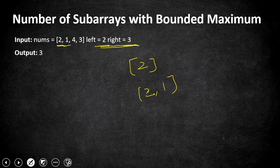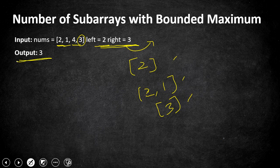Moving to the next element 4: 4 is the maximum element which is actually out of the right boundary, so you cannot include that element in any subarray or even as an individual number. The last element is 3, which is actually the maximum value we need, so we can form an individual subarray with value 3. Overall we found a total of 3 subarrays where the maximum value is between the bound, so we return 3 as output.